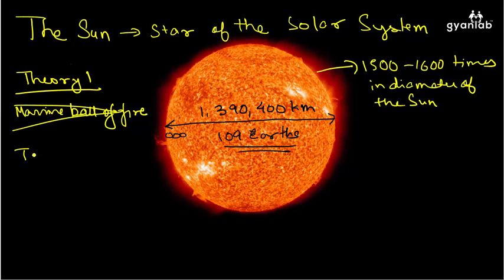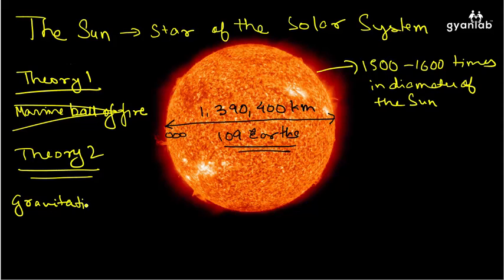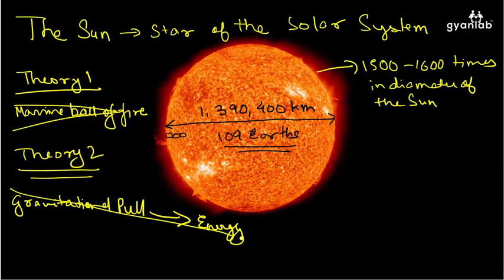Theory two that came about is that the gravitational pull of the Sun was being converted to energy. So gravitational pull was being converted to energy and this is how the Sun got its energy. But that was also all wrong.